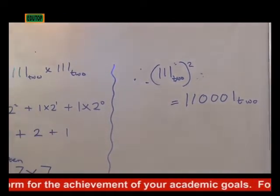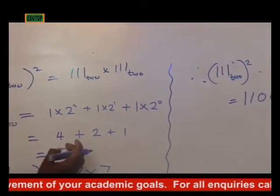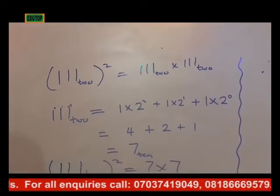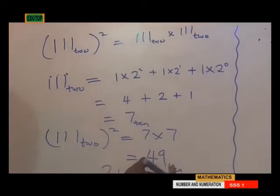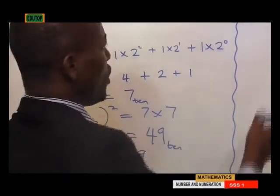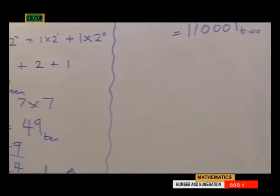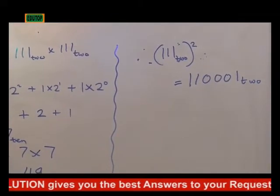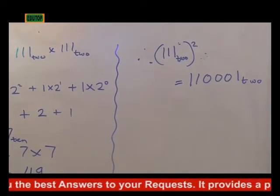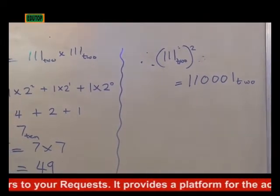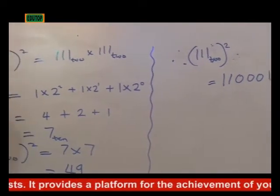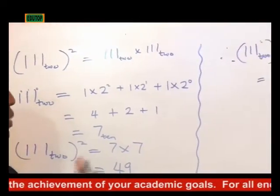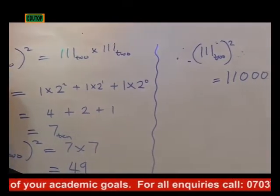That is, we first convert 1, 1, 1 in base 2 to get 7 in base 10. Then we square it to get 49. Now we convert that base 10 result back to base 2 and get our final answer. It is left to you to choose which method to use — if you are in a test and want to be smart because time waits for no man, you might choose the method used for question number 6, or this one. If you don't want to make mistakes, use this method. Either way, you get the same answer.